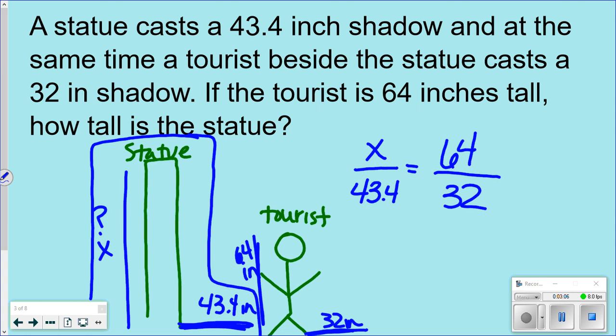And you would then do your cross products, figure it out. So you do 43.4 times 64 divided by 32.